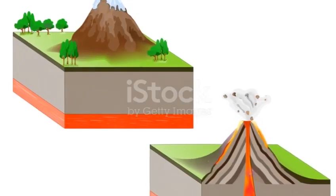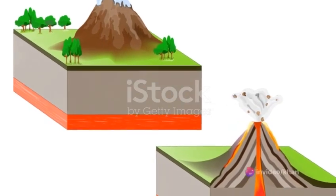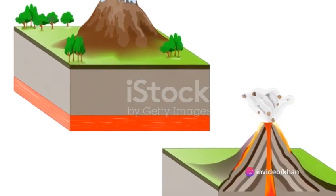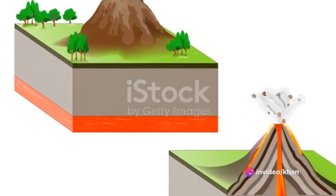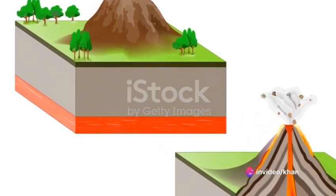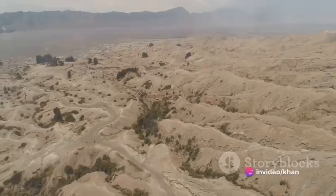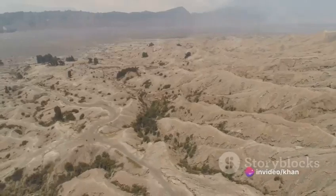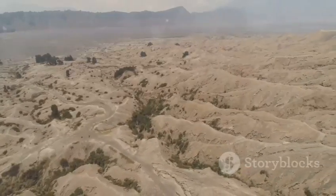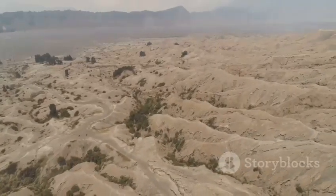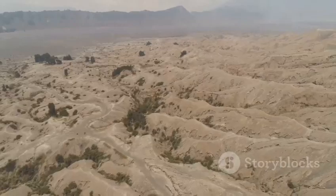Volcanoes can also form where there is stretching and thinning of the crust's plates, such as in the East African Rift and the Wells Gray-Clearwater Volcanic Field, and the Rio Grande Rift in North America.